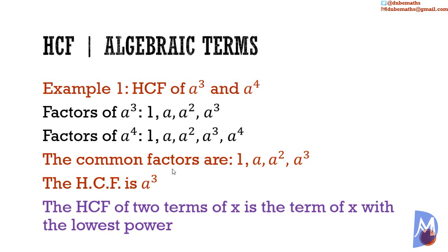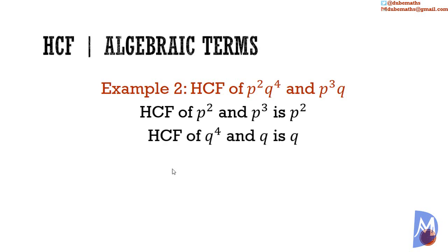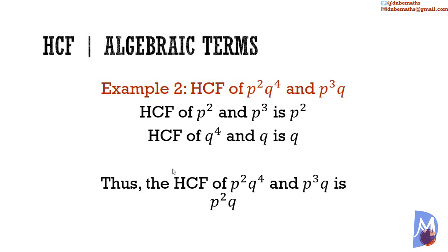It is the term with the lowest power. What about the HCF of p squared q to the 4th power and p cubed q? The HCF is the combination of the HCF of each letter that exists in all terms. The HCF of p squared and p cubed is p squared. And the HCF of q to the 4th power and q is q. So the HCF of p squared q to the 4th power and p to the 3rd power q is p squared q.